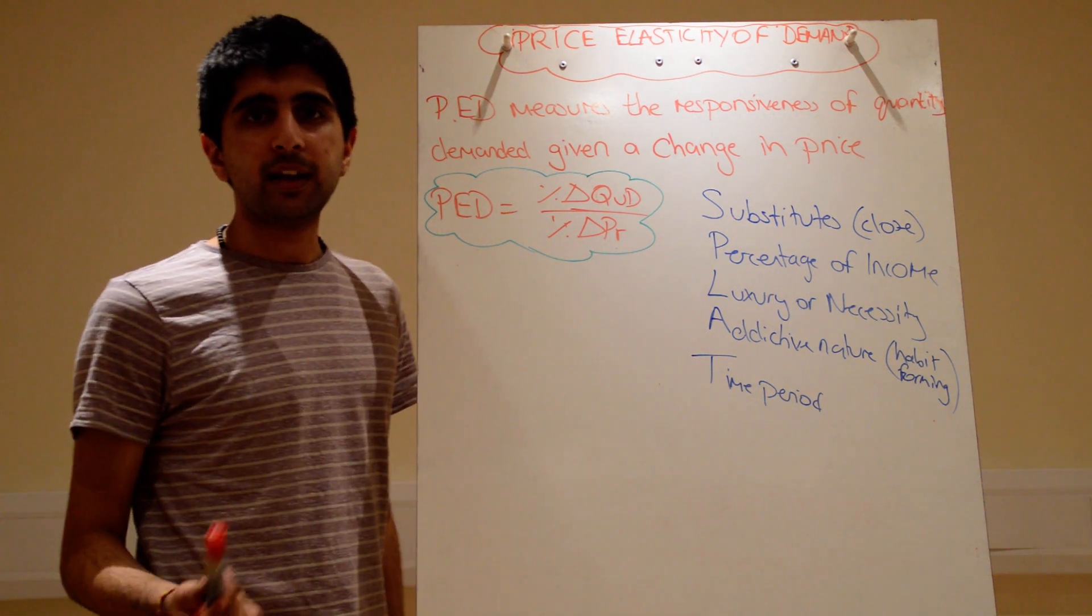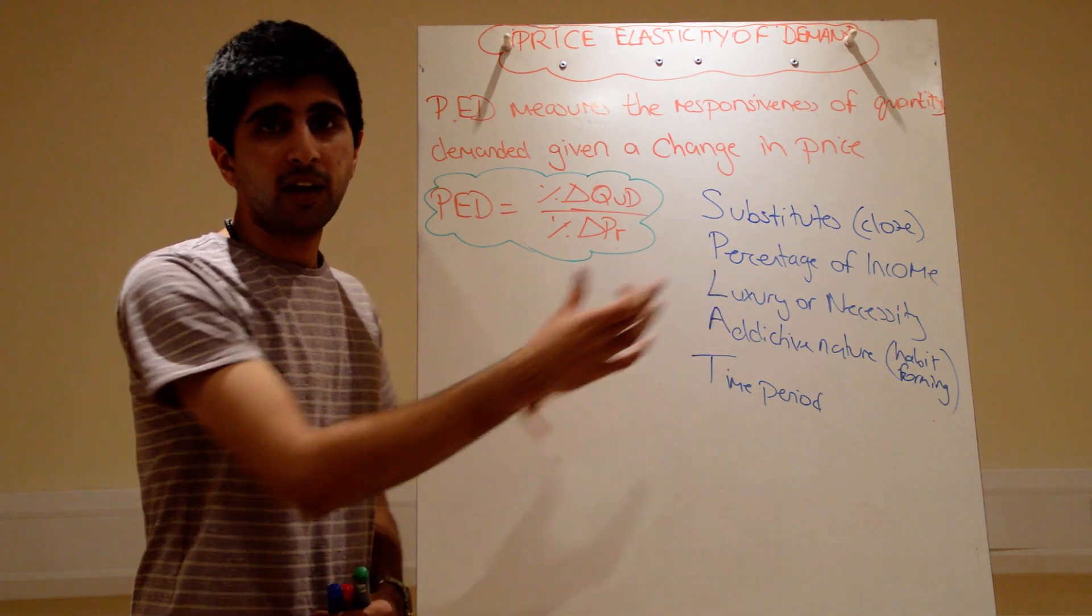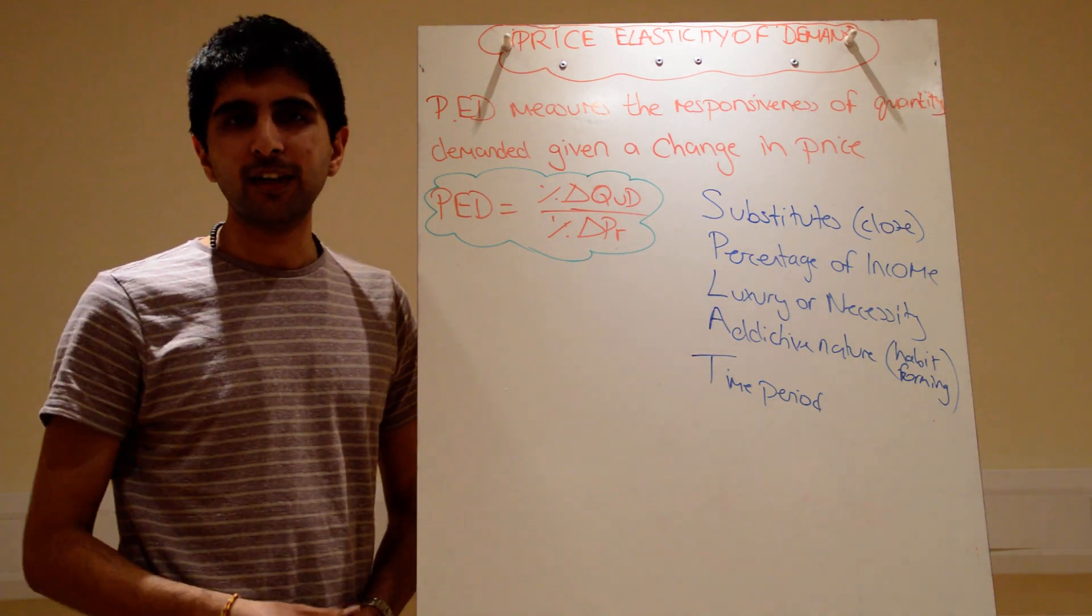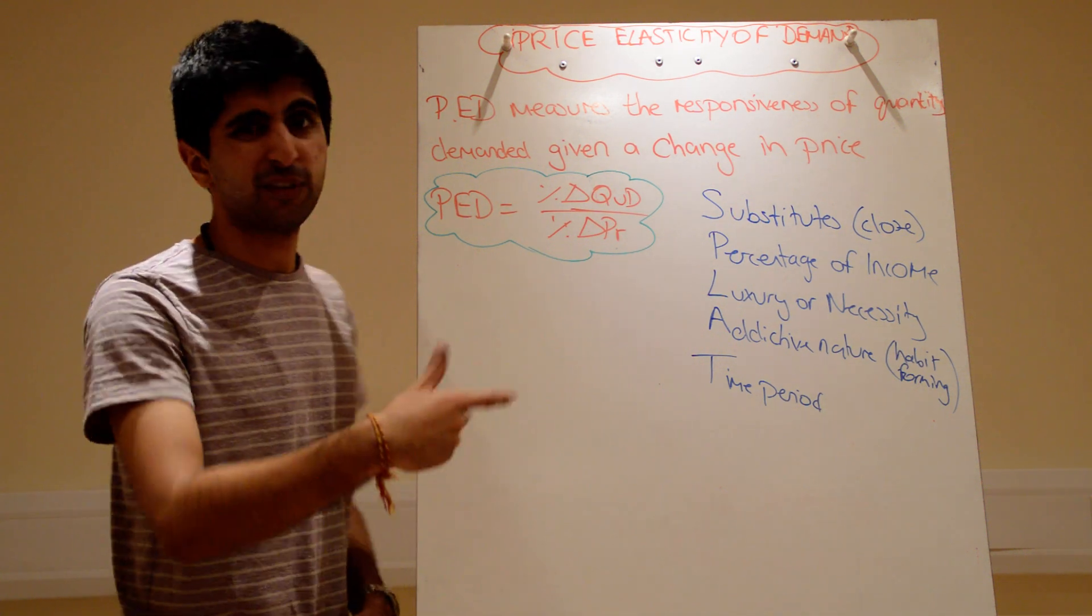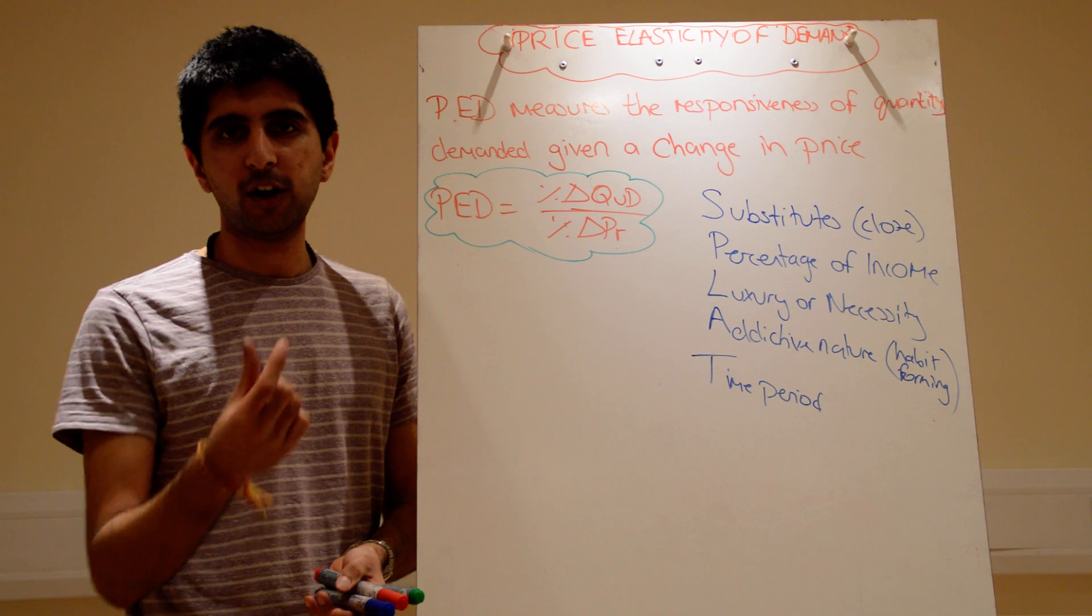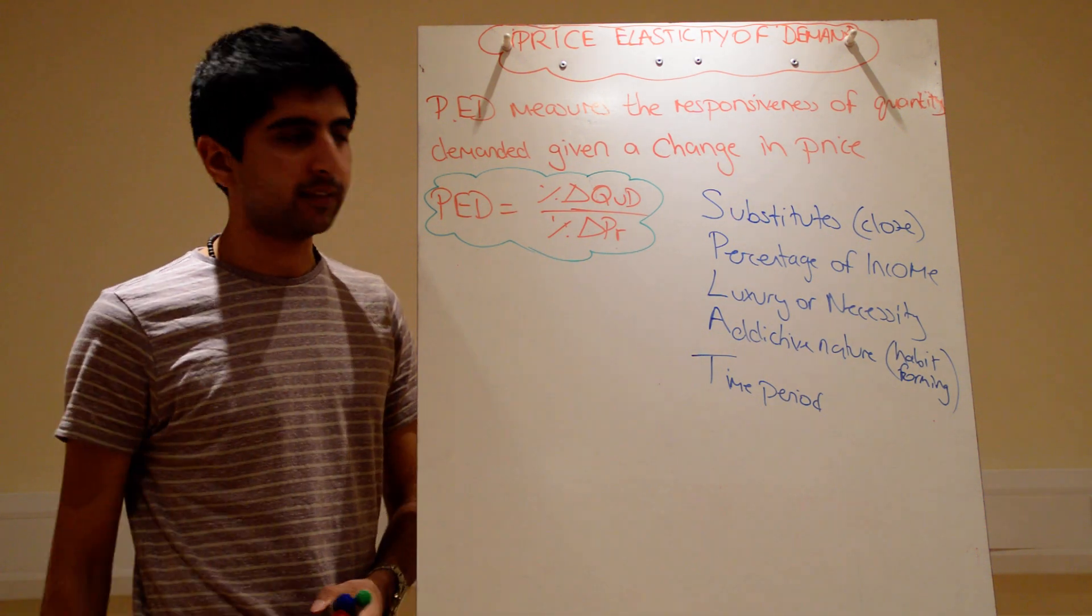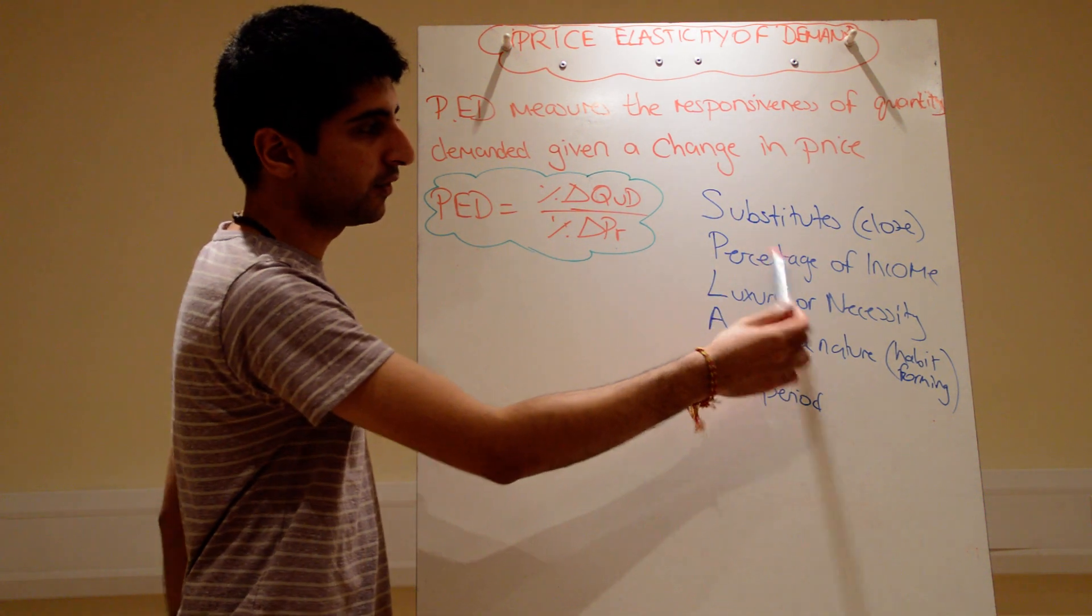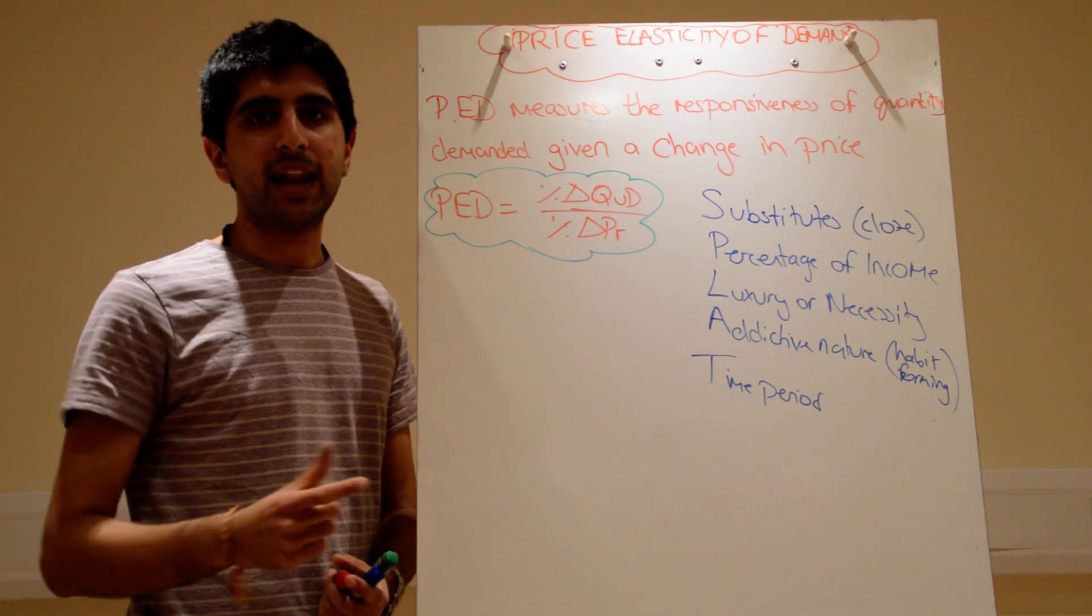Whereas, the same 10% increase in the price of maybe matches, well, as a percentage of your income, that's only going to be maybe a 2, 3% rise. It's a very small percentage of your income. So you think, well, I'm still going to buy matches. What is that to me? That's nothing. A tiny percentage of your income. It's not going to make any difference. If I'm paying an extra 3 pence. So in that sense, a small percentage of your income it takes up, then demand for that good will be very price inelastic.